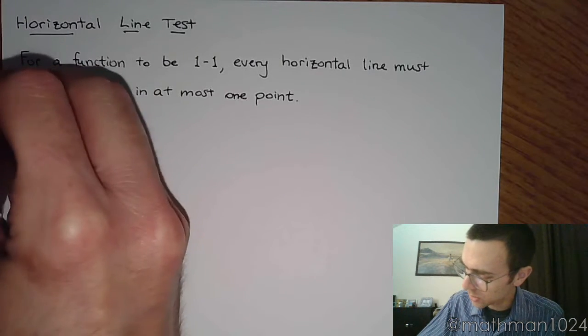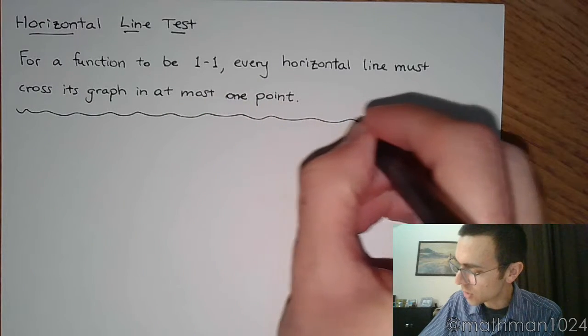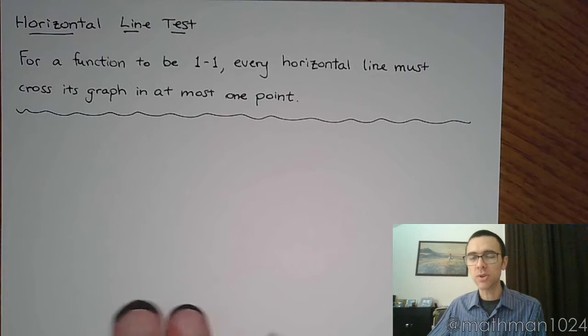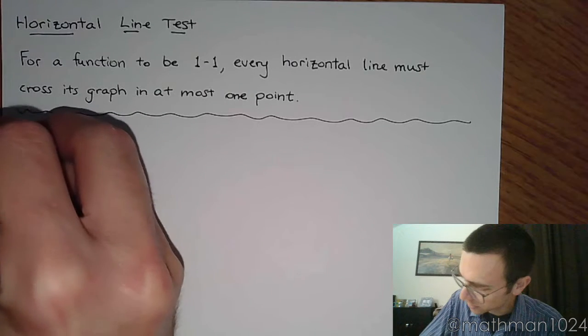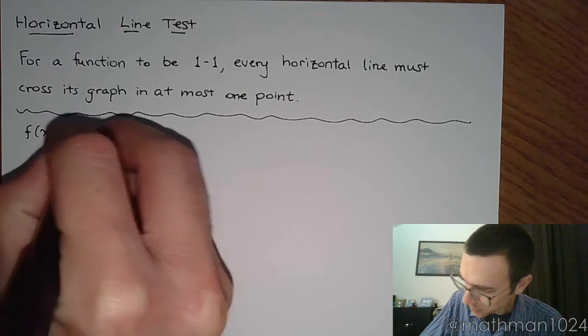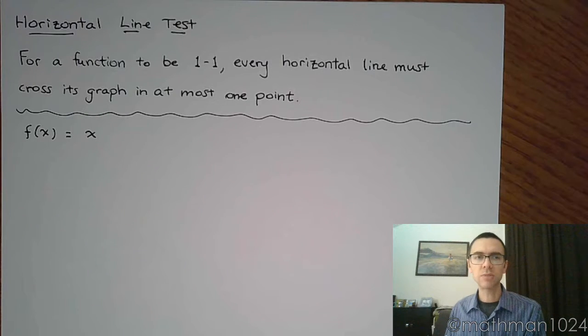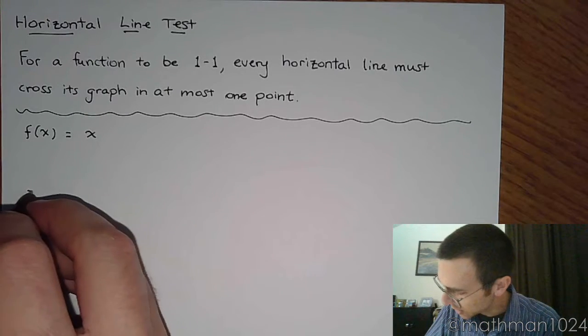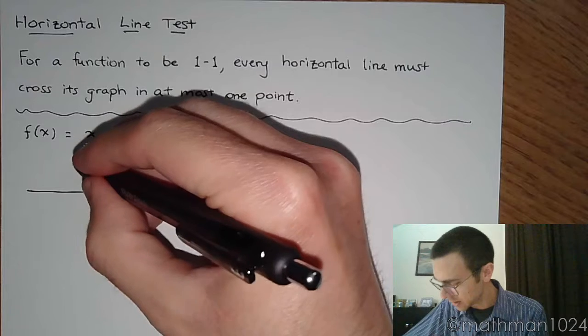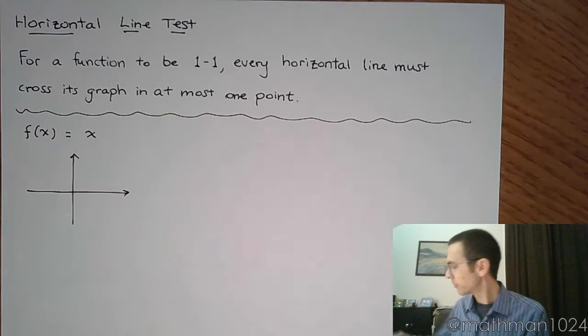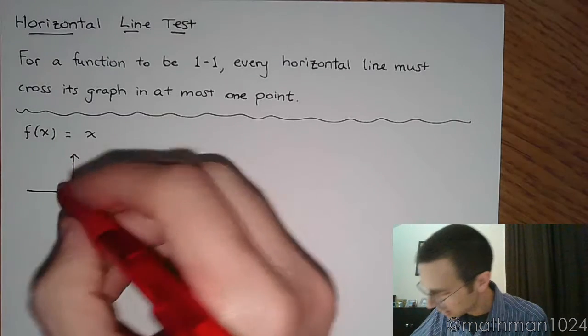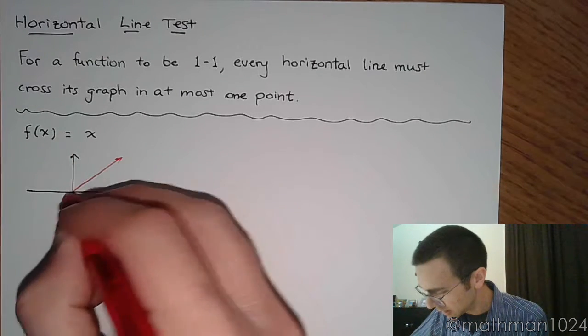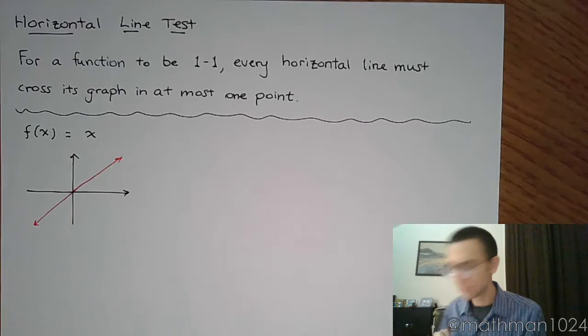Now what I would like to do is go through all the parent functions that we've talked about so far this semester and determine whether or not they are one-to-one, starting with the identity function. The identity function is the guy who looks like this - it's just that slanted line.